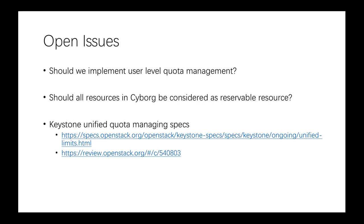The difference mainly lies in these three issues. In Nova, quota management has been implemented to the project-user level. Should we only implement the project level, or do we expect a scenario where we need to control user-level quota management? Another probable difference between Cyborg and Nova is that we may not need to divide different resources into different kinds. If we are only managing accelerators, we shall just implement the reservable resource and that is okay.